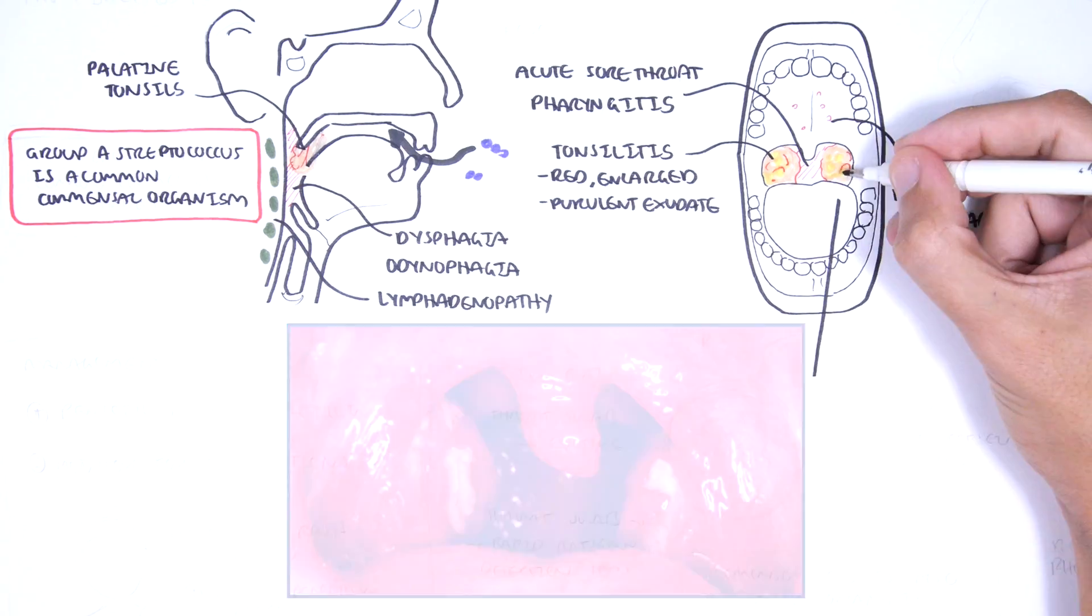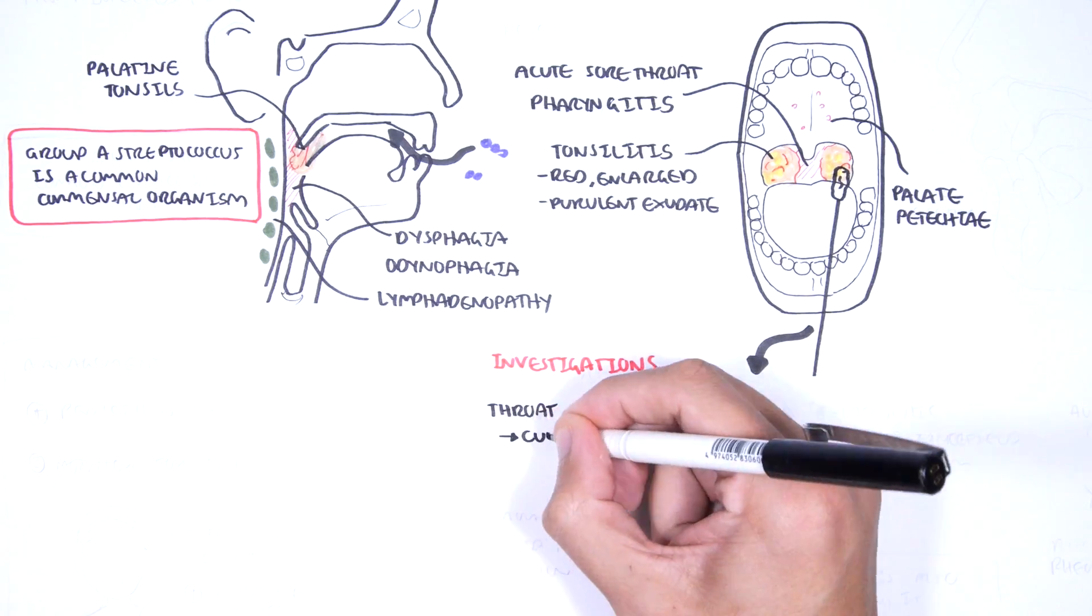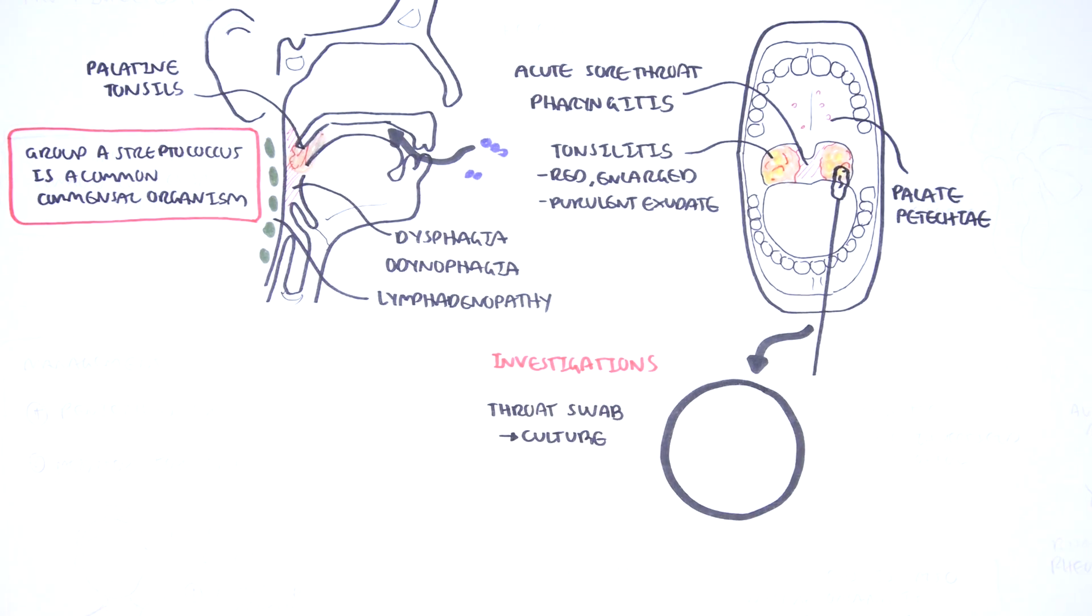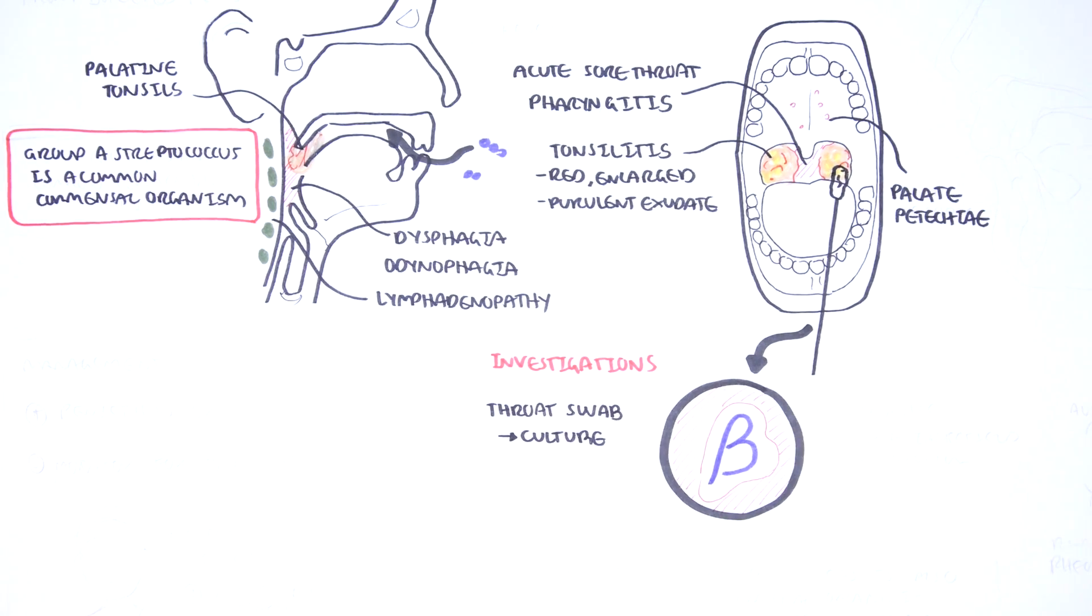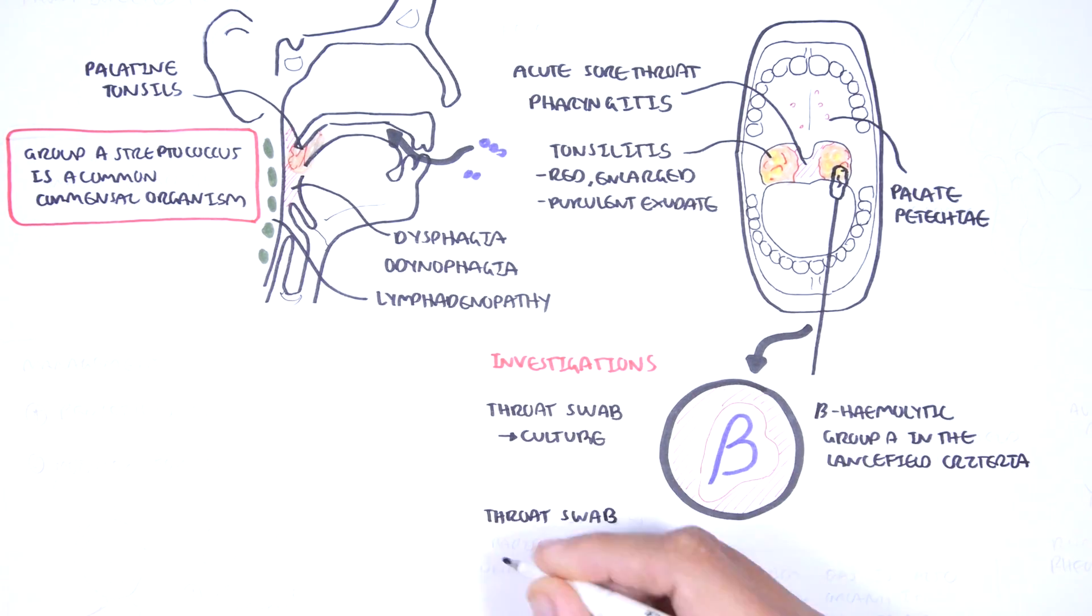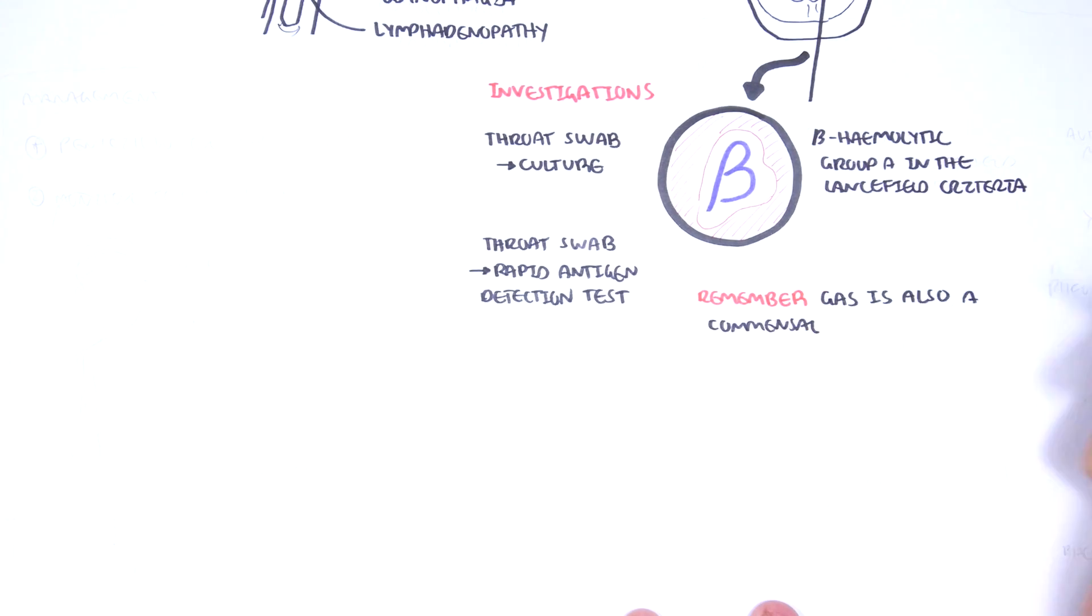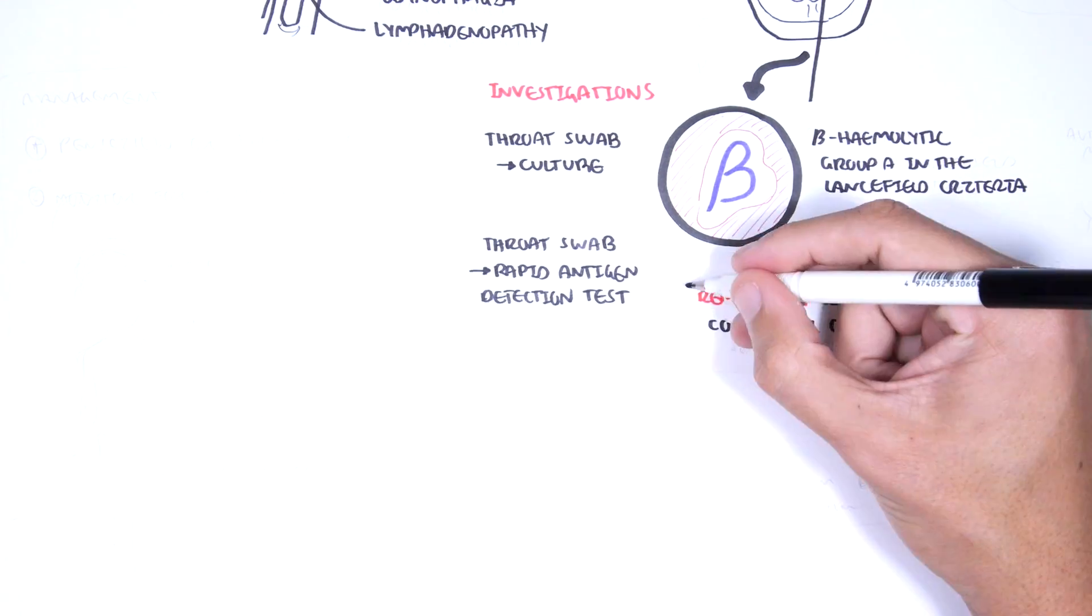A throat swab can be performed. A throat swab with microscopic culture and sensitivity in blood agar will help diagnose Group A Streptococcus because it will show beta hemolytic cocci. The throat swab for rapid antigen detection test, RADT, can also be used. In general though, throat swabs are not very useful because remember, Group A Streptococcus are commensal organisms in many people.